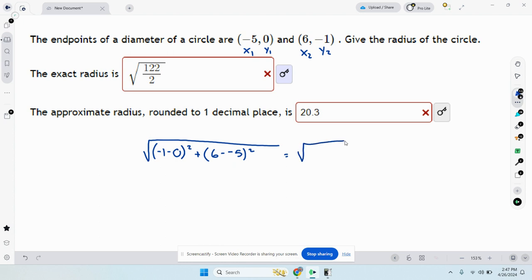This gives me the square root of, this is -1 squared which will give me 1, right? Because this whole thing is going to be -1 squared, plus this is going to be 6 plus 5. That's 11 squared. So this is 1 plus 121.